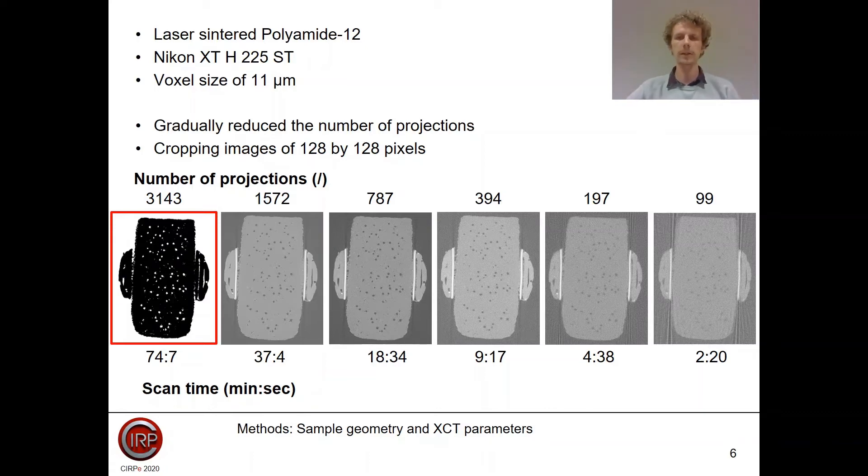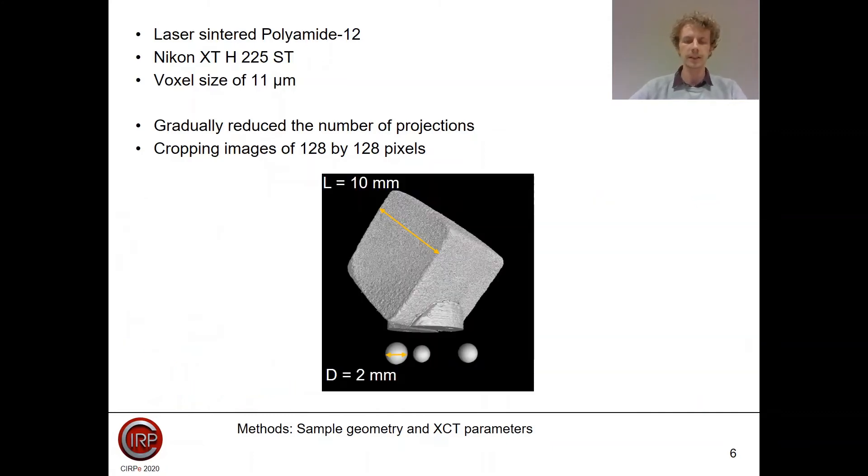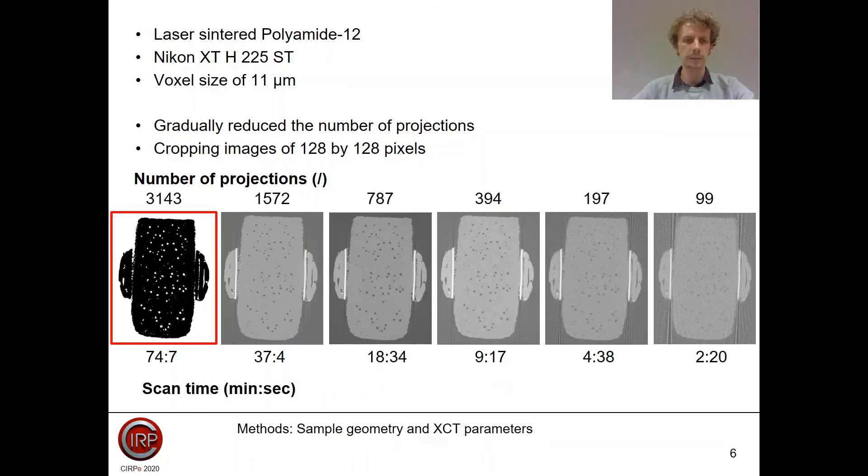To perform the alignment between the high-quality and low-quality scans, we attached three metal spheres to the support of the cube. Now we can make sure that the voxels in the high-quality scan and in the low-quality scan are representing the same part of the object. From these slices we cropped images of 128 by 128 pixels. We created a database of 2,000 training images, 1,000 validation images, and 1,000 test images.